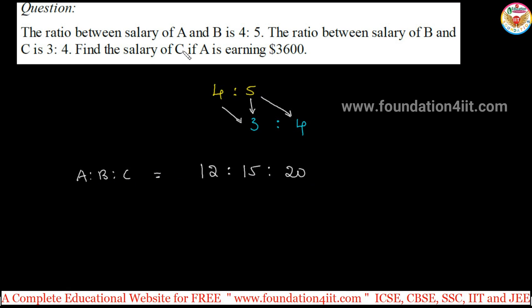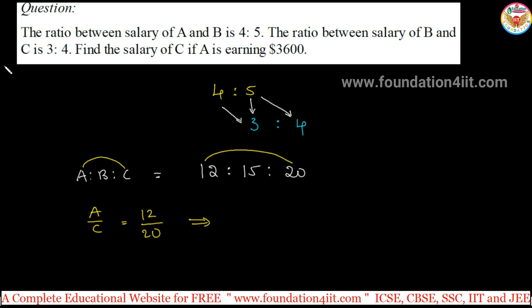So, in this salary of C, we have to find out A is given. Let us take only A and C that is 12, 20. So, what to write? A by C is equals to 12 divided by 20. Here A is earning 3600. Just in the place of A, 3600 you just substitute. That is it. So, 3600 divided by C is equals to 12 by 20.